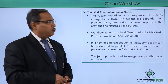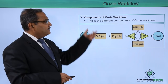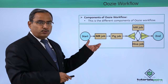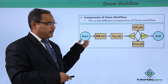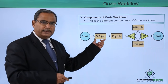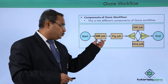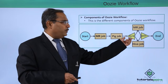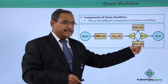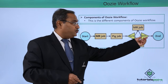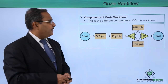Let us discuss this with a proper diagram. These are the different components of OZI workflow. Here we are having the start, then we are having a MapReduce job and a Pig job — so two jobs are there. Then OZI will do the fork, so these two jobs will be executed in parallel, then join will be there. Then it will have proper completion and end.